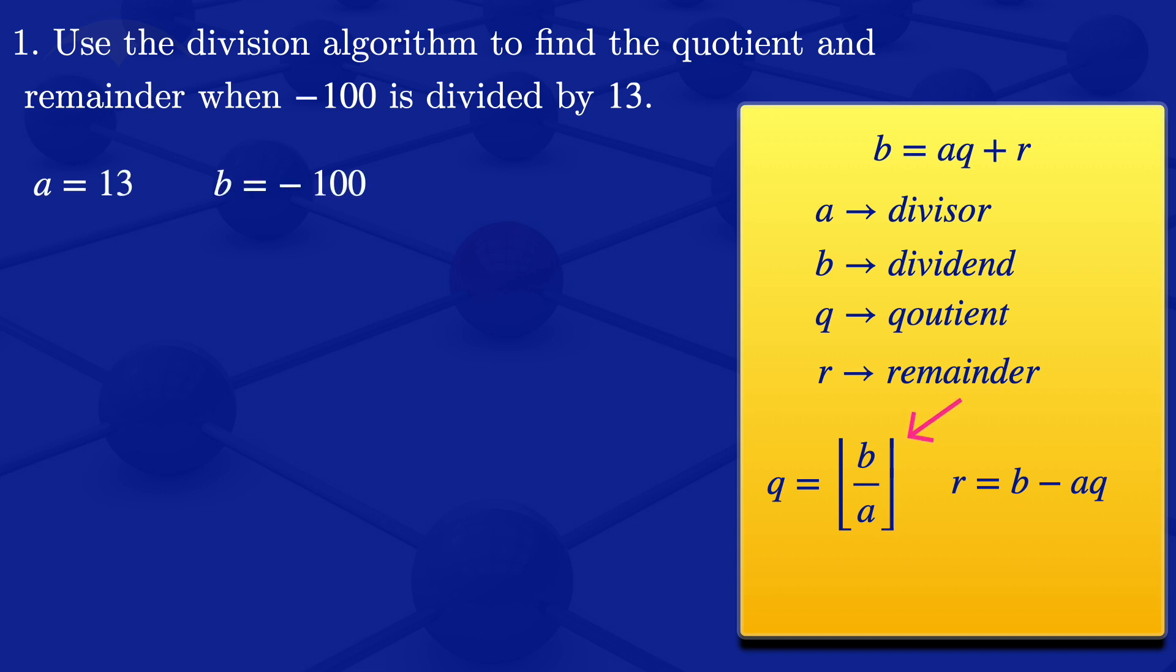So using this formula here for the quotient, we will be having that our quotient in this case will be the floor value of minus 100 divided by 13. And that floor value will give us minus 8. So we have found our Q.